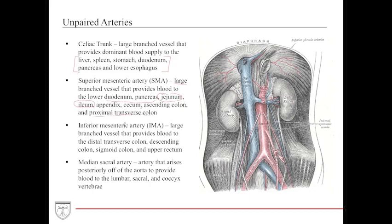Part of the blood also goes to the proximal transverse colon. The IMA provides blood to a portion of the colon — distal transverse and, more importantly via anastomosis, all the descending colon, the sigmoid, and a portion of the upper rectum. The other portion of the middle and lower rectum is provided by blood entering via the common iliac arteries. The median sacral artery, branching right off the middle of the abdominal aorta almost at the bifurcation, rises posteriorly and provides blood to the lumbar, sacral, and importantly the coccyx vertebrae.